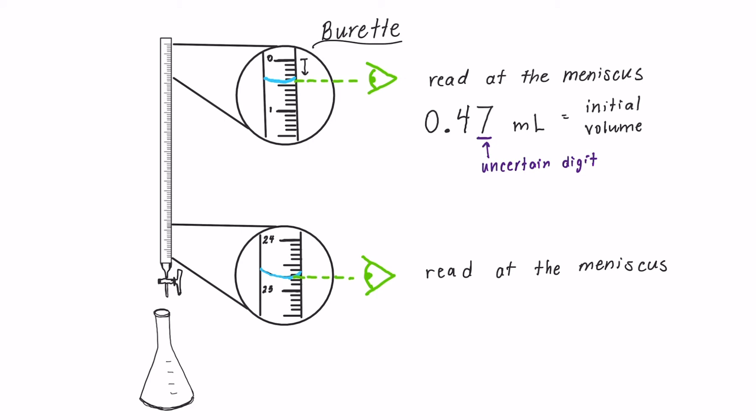Now when we read from the top down, we should record 24.7, and then our uncertain digit, which we'll estimate as 8 milliliters. So our second reading also has the uncertain digit in the second decimal place. And this will be our final volume.